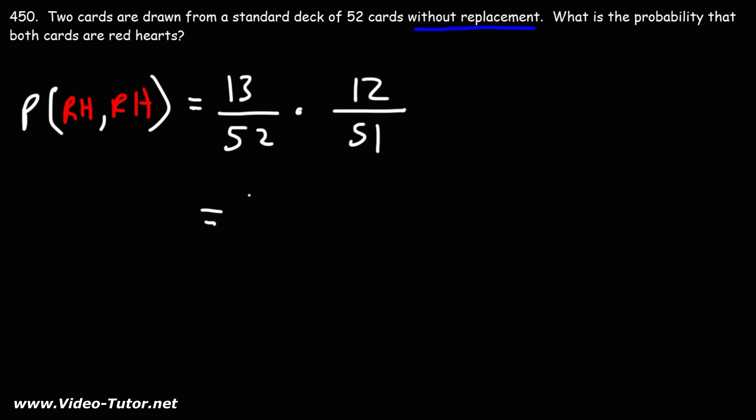So, let's simplify this. 13 is 13 times 1. 52 is 13 times 4. 51 is 3 times 17, and 12 is 3 times 4. We could cancel a 13, we could cancel a 4, and we could cancel a 3.